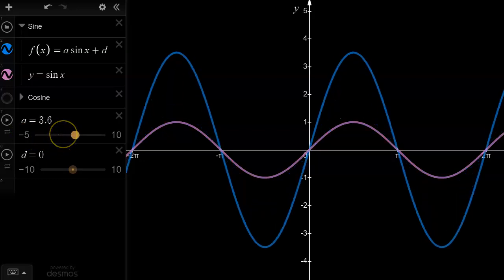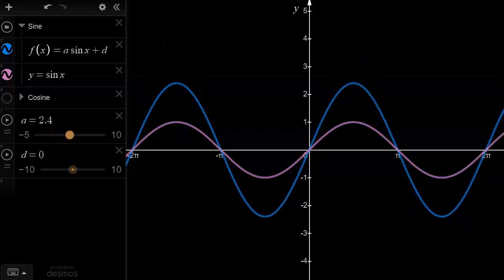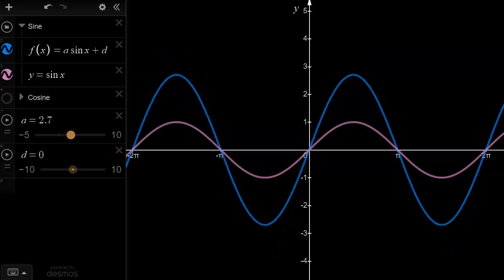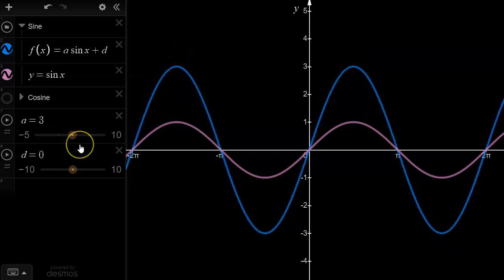Now by adjusting the a value, you can see that the graph undergoes a vertical stretch about the x-axis. Recall from your previous studies that this type of transformation can be carried out by multiplying all of the curve's y-coordinates by the vertical stretch factor.